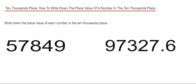We've got 57,849. If we count five places from the right-hand side, we've got nine in our ones, four in our tens, eight in our hundreds, seven in our thousands, and then...